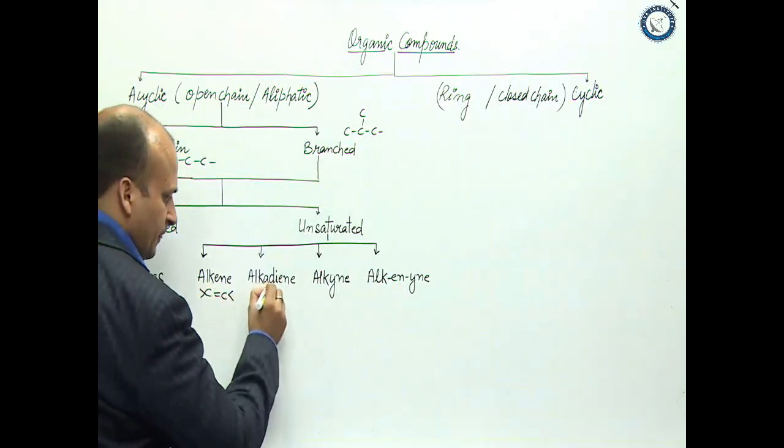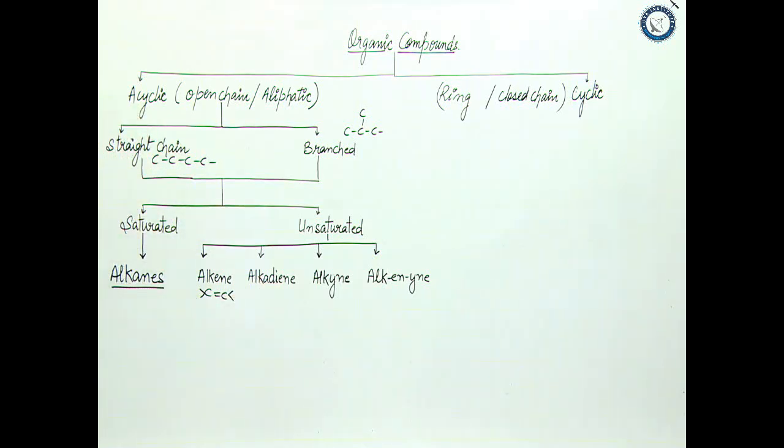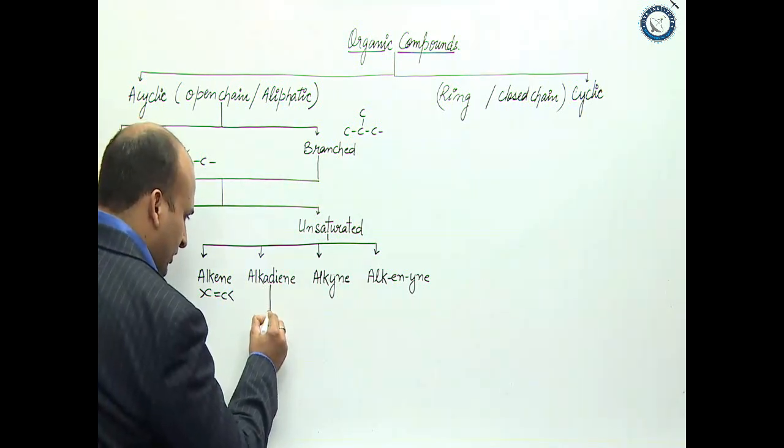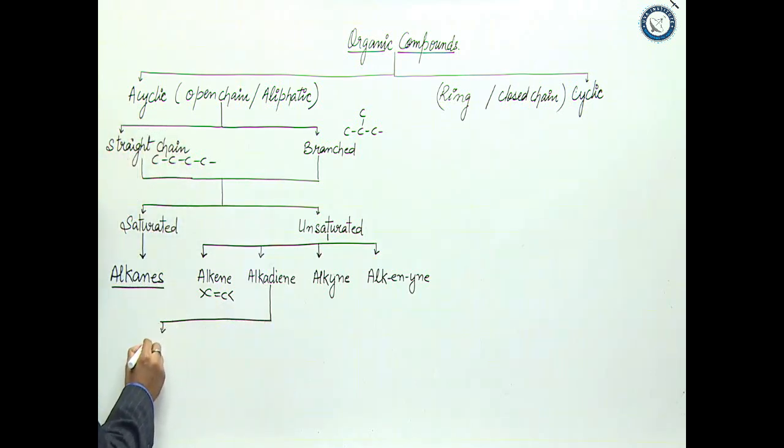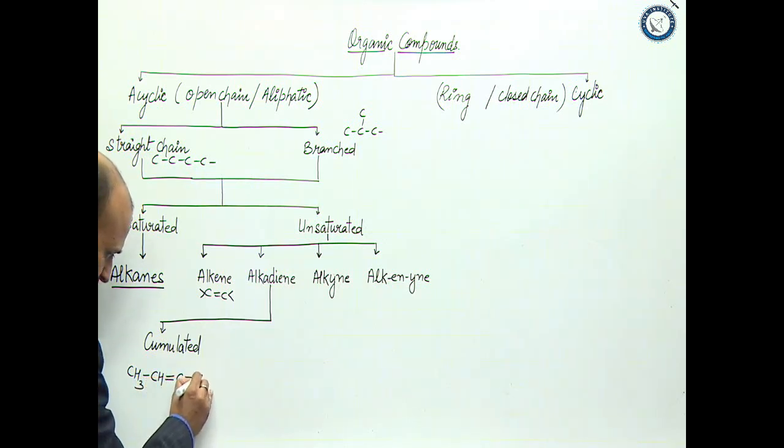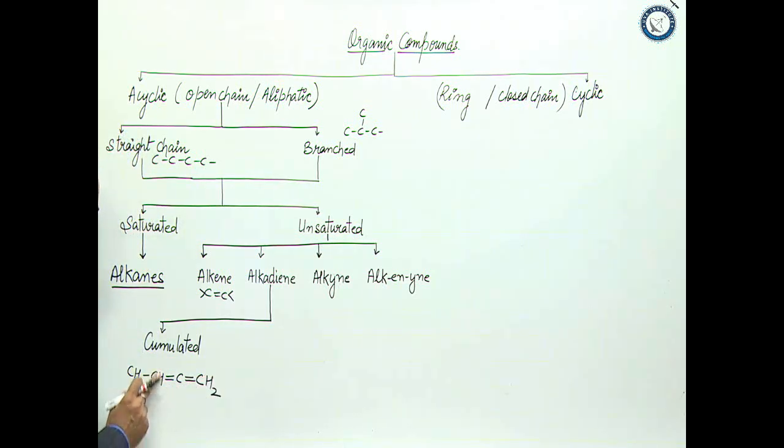Now there are some possibilities. First is cumulated dienes, which means the double bonds are next to each other. For example, CH3-CH=C=CH2. So double bonds are just next to each other - this is cumulated dienes.